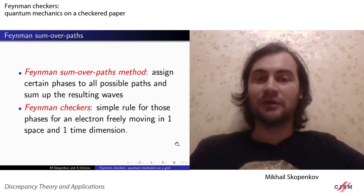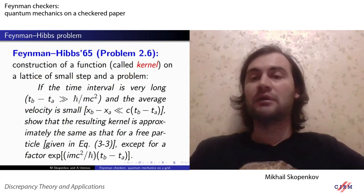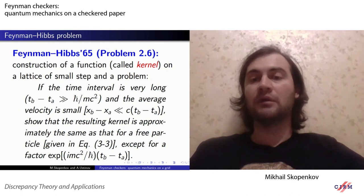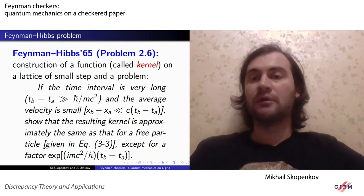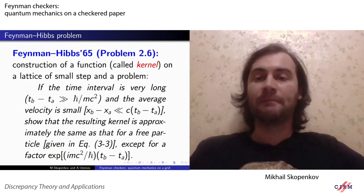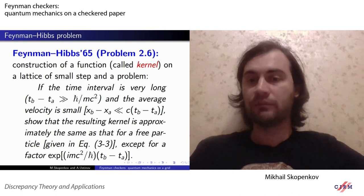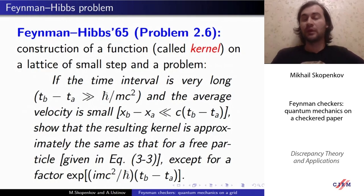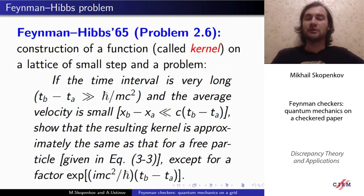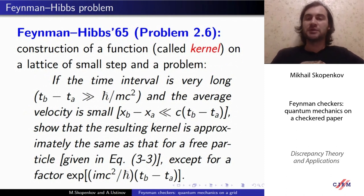Feynman invented his model in the 1940s, but it was published only in 1965 in Feynman's book on quantum mechanics, and there was just a single problem about this model. In that problem, Feynman constructed a function called the kernel on a lattice of small step and posed the following problem. We quote from the original Feynman-Hibbs book: if the time interval is very long and the average velocity is small, show that the resulting kernel is approximately the same as that for a free particle, except for some exceptional factor. The mathematical solution of this problem is one of the main results of this talk — this problem is solved mathematically for the first time.